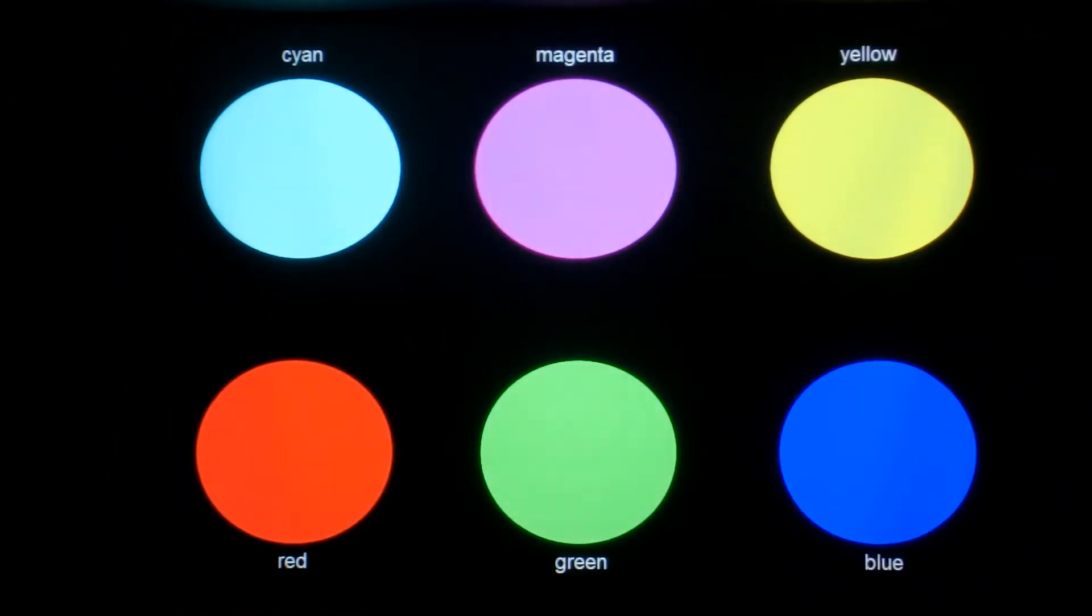The blue filter will allow blue light to pass through, but will block red and green. So the red and green go black. The cyan and the magenta appear blue. The yellow also goes black.